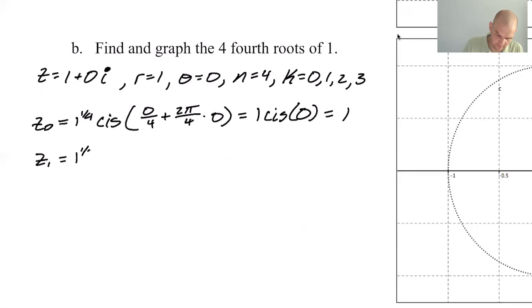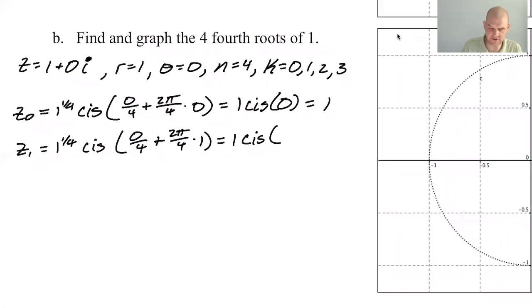Z₁, 1 to the 1/4, cis 0 over 4 plus 2π over 4 times 1, which is going to be 1 cis. So, I mean, 2π over 4 is π/2. So you could just reduce that. This will be π/2. So that's going to be cosine of π/2 is 0, sine is 1. So this is just i.